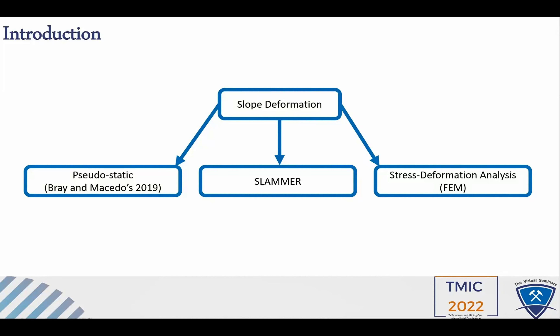These unrecoverable deformations result in permanent deformation at the conclusion of the seismic event. For the present study, the Newmark time history analysis was performed inside Slide2 software. The third method we used is stress deformation analysis using the finite element method. We used RS2 software from RocScience to estimate the seismic deformation. The results were then compared across all three methods.